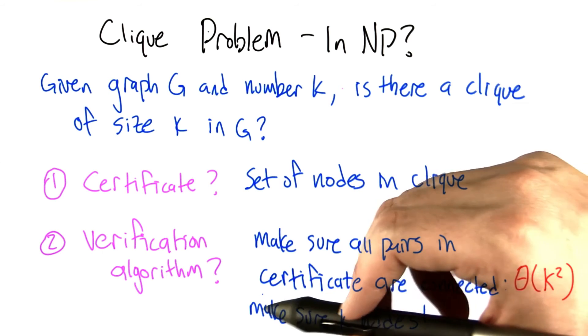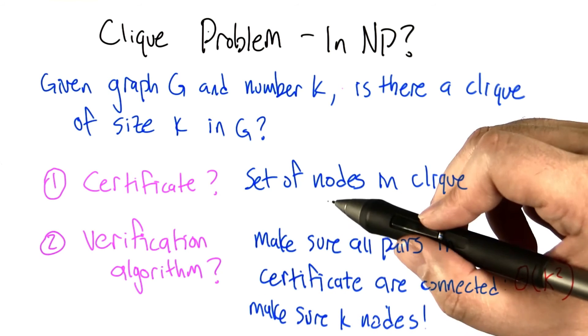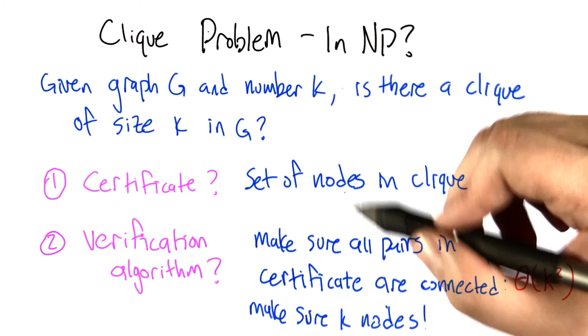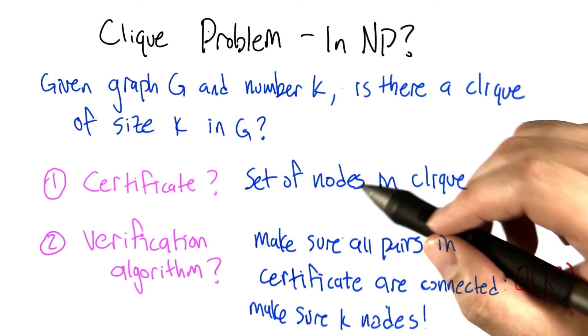And just to make certain here, the verification algorithm could also check to see that the certificate that you gave it actually consists of k nodes, just to be careful. Well, let's go ahead and see that in the graph.